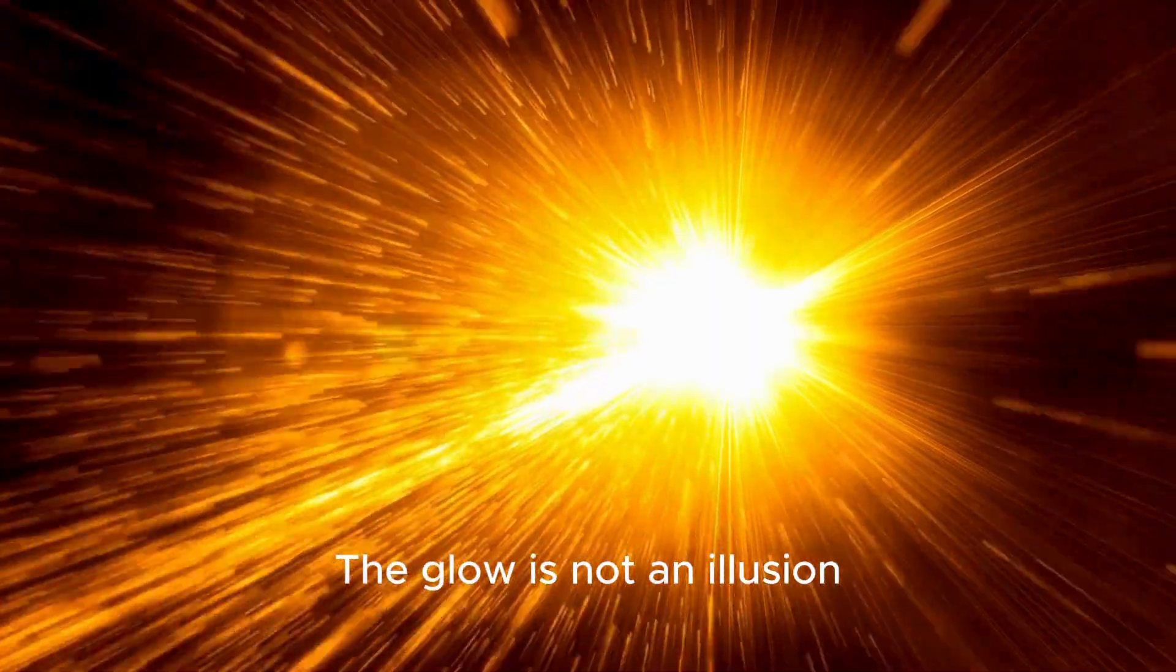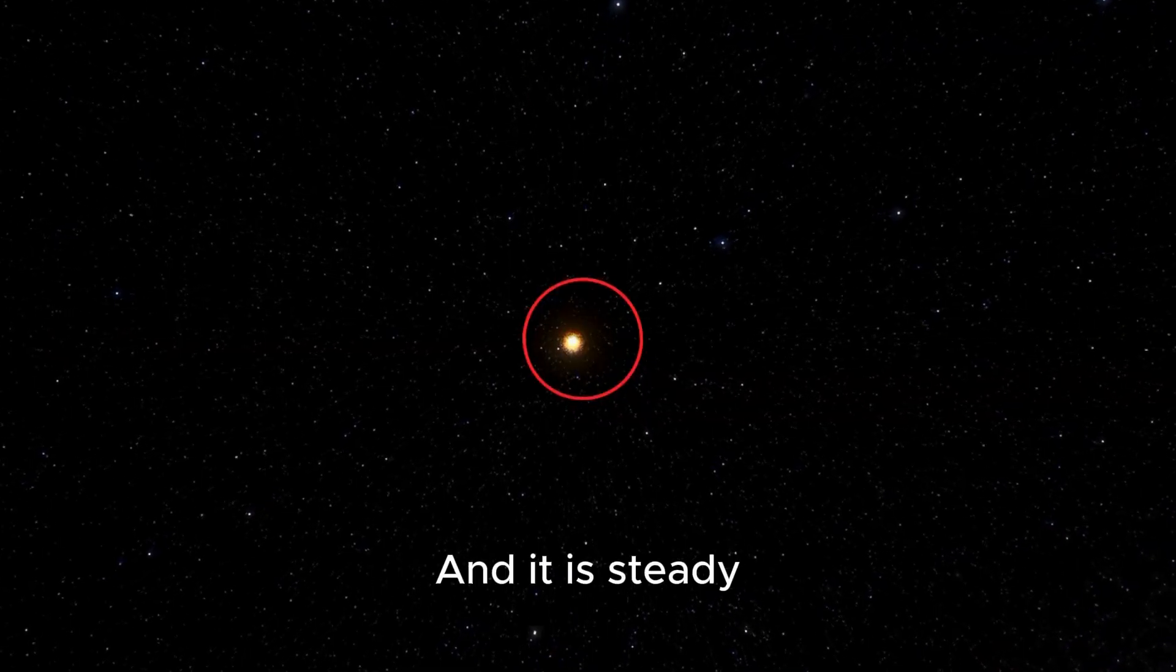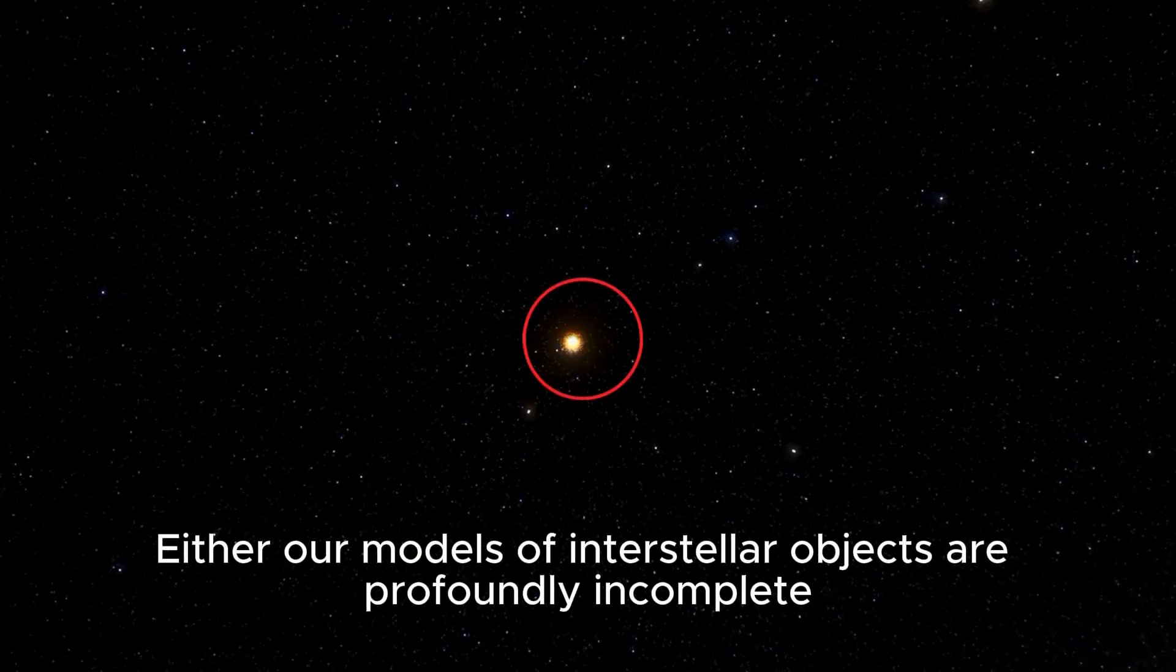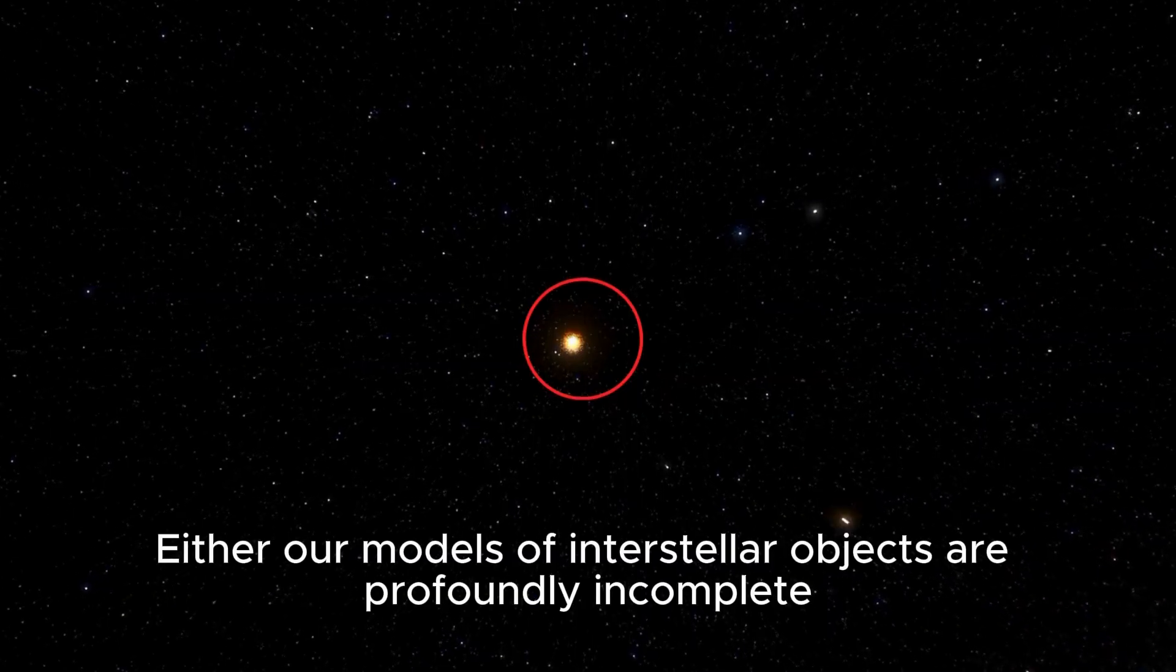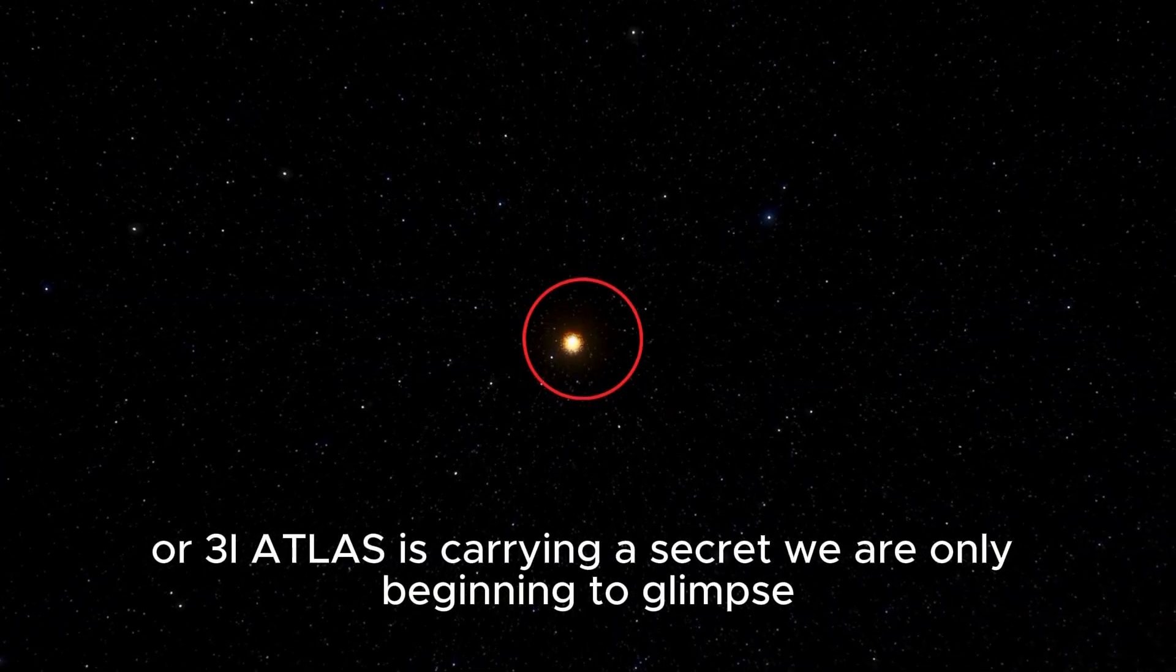And so the tension grows. The glow is not an illusion. It is not a trick of angle or timing. It is real. It is measurable. And it is steady. Either our models of interstellar objects are profoundly incomplete, or 3i Atlas is carrying a secret we are only beginning to glimpse.